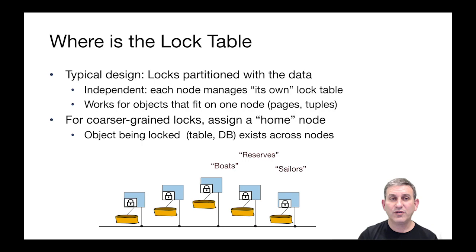So where is the lock table in a distributed database system? Well, in a typical design, the locks live on the same computer as the data that they represent, so the locks are partitioned with the data. This makes every node roughly independent. Each node manages its own lock table for its own data. This works well for objects that fit on a single computer, like a page or a tuple.